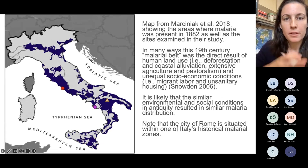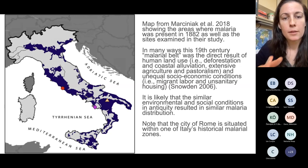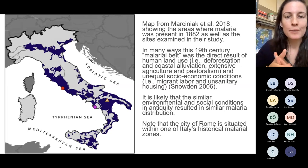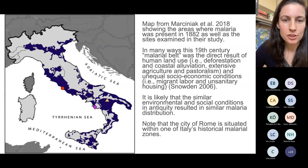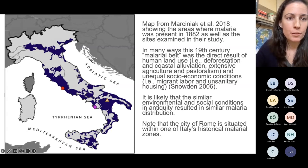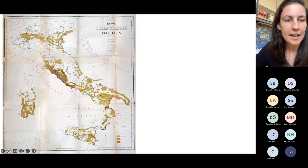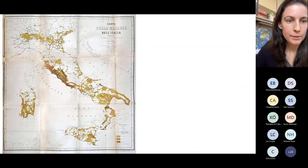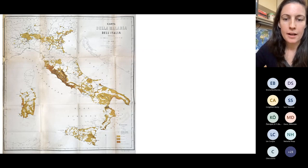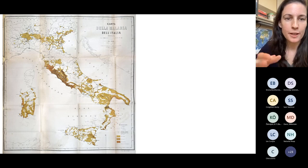This is a map from the Marciniak et al. paper showing where malaria was present in 1882, giving us a glimpse — though we don't know how far back we can project this — of regions shown in blue where malaria would have been highly prevalent before modern containment efforts. You can see Rome is in the midst of this 'malaria belt,' suggesting malaria may have had much more impact there than in other parts of Italy or Europe, which will become relevant shortly.